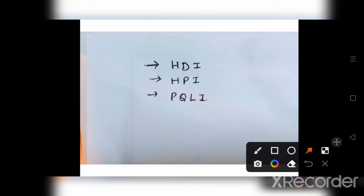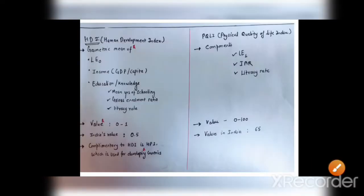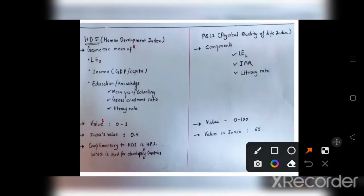Let's know what is Human Development Index first. Human Development Index is the geometric mean of life expectancy at the age of zero, income which is GDP per capita at the national level and GNI per capita is taken, and third component is knowledge. It is further divided into three things: mean year of schooling, gross enrollment ratio and literacy rate.